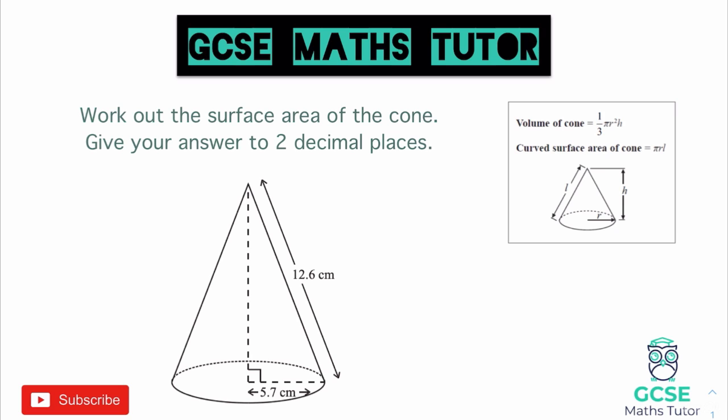We're going to start off by looking at the surface area. For this topic you are going to need a calculator, so do make sure you've got one to hand because we're going to be using the pi button. The question says work out the surface area of the cone and give your answer to two decimal places. On the exam you would be given the formulas for working out the volume and the curved surface area of the cone. We're going to look at the curved surface area first - it is pi times radius times the length, where the length is the diagonal length going down the side of the cone.